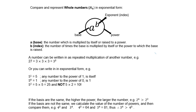If the bases are not the same, we calculate the value of the powers and then compare them. For example, 4 to the power of 3 and 3 to the power of 4: 4 to the power of 3 is 64, and 3 to the power of 4 is 81. Thus, 3 to the power of 4 is greater than 4 to the power of 3.